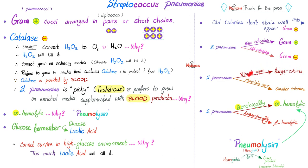But if you disrespect it and do not provide blood, i.e. you provided something like chocolate agar, it can grow, but with smaller colonies. Streptococcus pneumoniae is alpha-hemolytic.